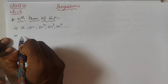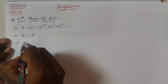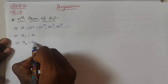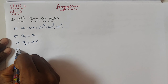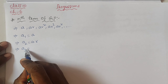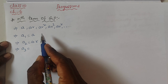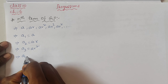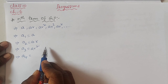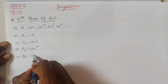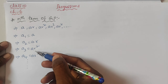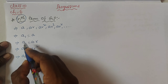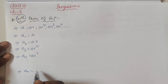Here a₁ or a is the first term, and a₂ is the second term — found by multiplying the first term with the common ratio, so a × r. Then a₃, the third term, is found by multiplying the second term with the common ratio: ar × r = ar². Similarly a₄ = ar³. We will now derive the nth term from this general form.